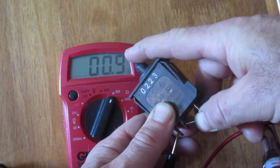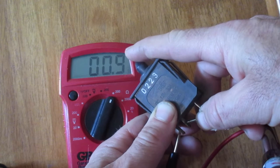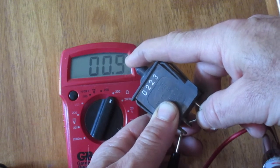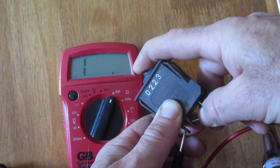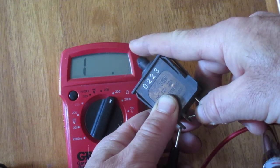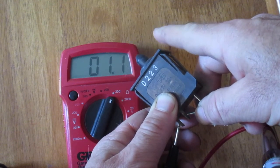Then when I press this accelerator switch, it should go back to no continuity, which is that 1 meaning nothing's passing through. And it should come back to around 1 when I release that. And it is.